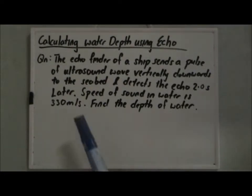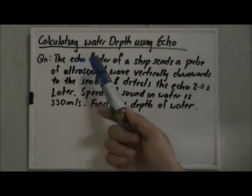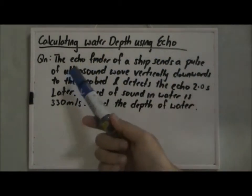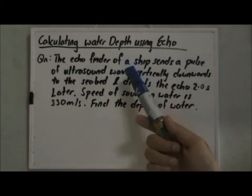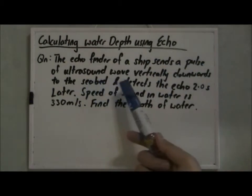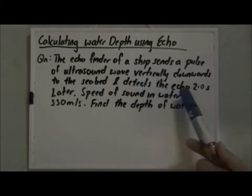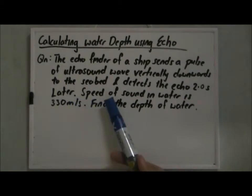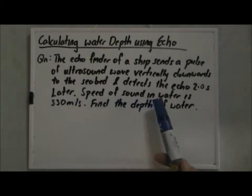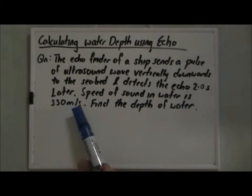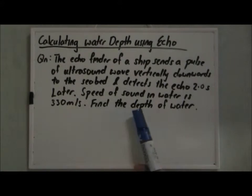Now let's look at it. The echo finder of a ship sends a pulse of ultrasound wave vertically downwards to the seabed and detects the echo 2 seconds later. The speed of sound in water is 330 meters per second. We need to find the depth of the water.